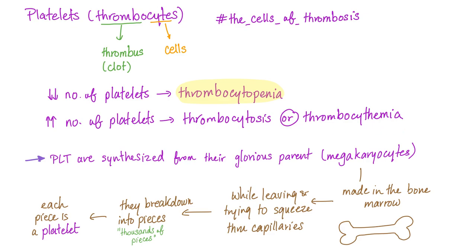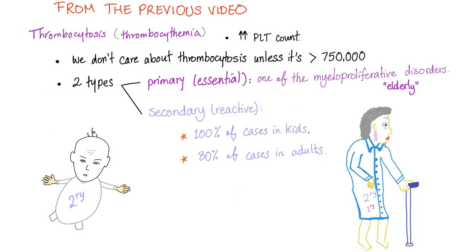Increased number is called thrombocytosis or thrombocytemia. Quick review: we had two types of thrombocytosis — primary or essential, which is part of the myeloproliferative neoplasm, and secondary, which is the most common. It's secondary to another disease. 100% of cases in kids are secondary; 80% of cases in adults are secondary.